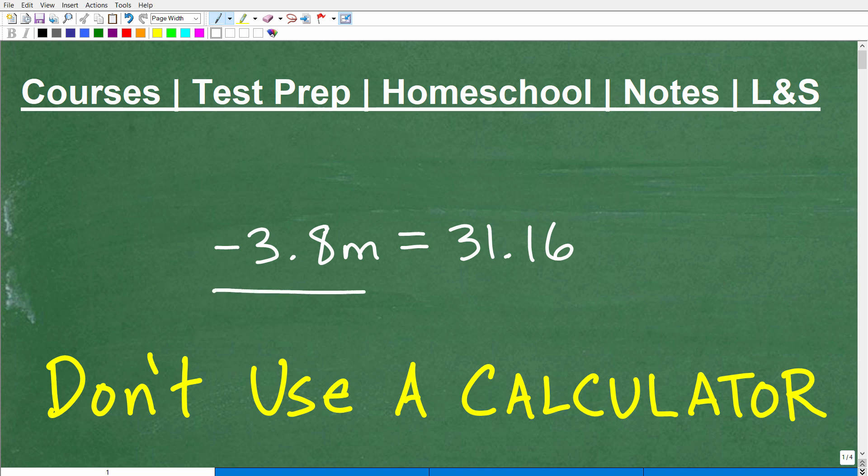Okay, let's go ahead and solve this nice basic equation. So you can see we have negative 3.8m, so we're going to be solving for m, is equal to 31.16.